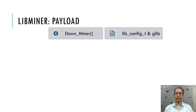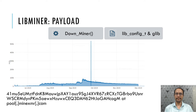LibMiner downloads the mining components and executes them to initiate mining activity inside the victim container. The components include the XMRig executable and a configuration file. On initiating the mining, the miner connects to the mine.xmr.com mining pool and generates revenue for a given wallet address. From the graph it's visible that active mining was seen for this wallet address from July 2019 to December 2019.